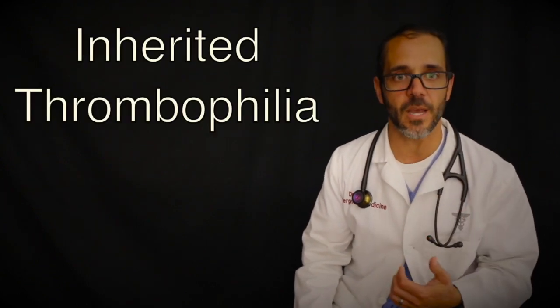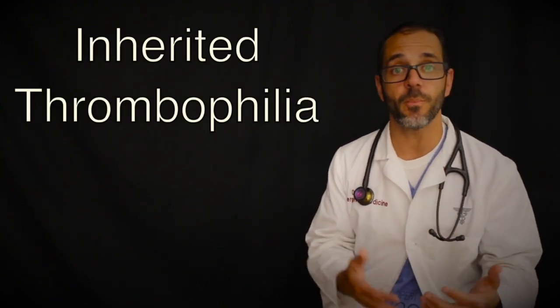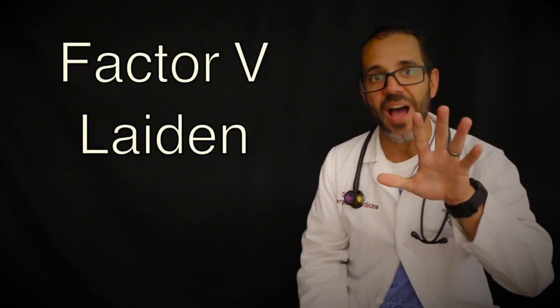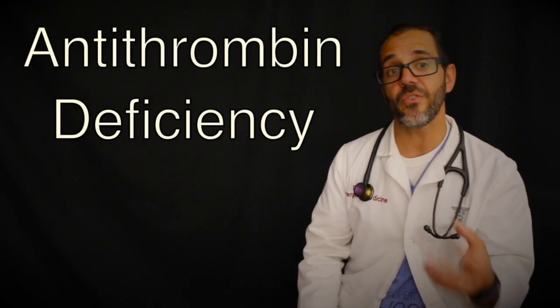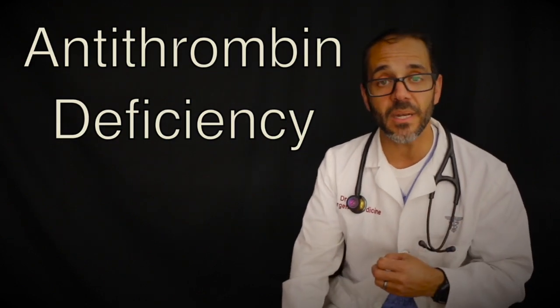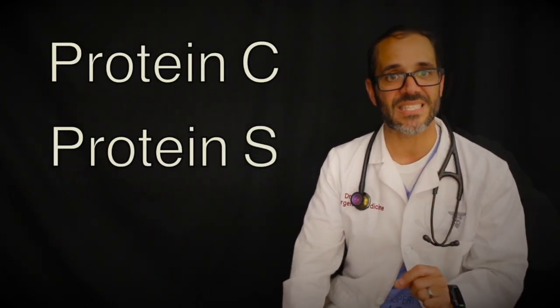People diagnosed with a venous thromboembolism are occasionally found to have an inherited thrombophilia. Examples of inherited thrombophilia include factor V Leiden, the prothrombin gene mutation and deficiencies of antithrombin, protein C and protein S.